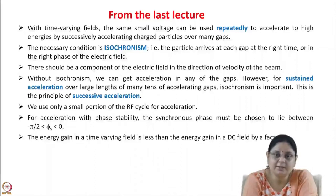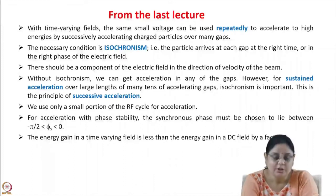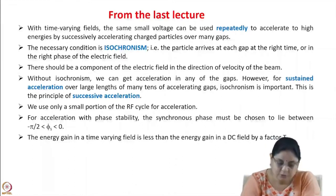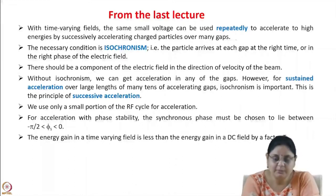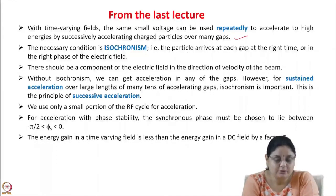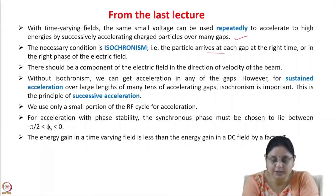Unlike a DC accelerator we need not generate a very high voltage — we can generate a small voltage and use it several times for accelerating to high energies. The necessary condition is isochronism: that means the particle arrives at each gap at the right time to see the right phase of the electric field and get accelerated.